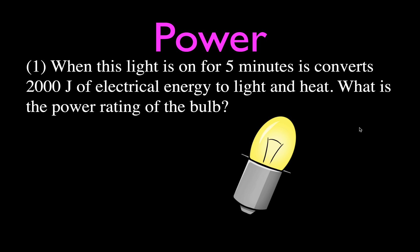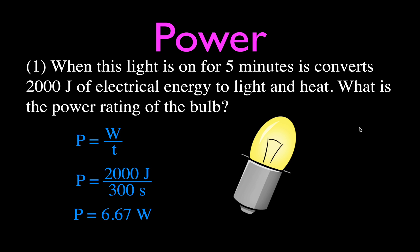Example 1: A light bulb runs for 5 minutes and converts 2,000 joules of electrical energy to heat and light. What's the power rating? Using P = W / t, the work is 2,000 joules. We must convert 5 minutes to 300 seconds. So the power is 2,000 divided by 300, which gives us 6.67 watts. That means this light bulb converts 6.67 joules of energy every second.